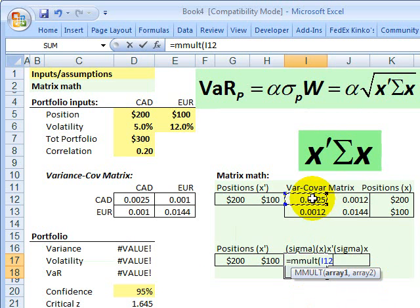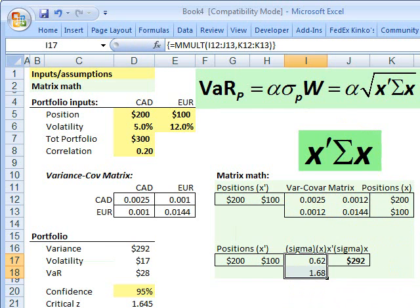MMULT is the Excel function for matrix math. And I'm going to literally select the variance covariance matrix, comma, see how I'm right here. And then my positions, that's my X right here, close parens, and then hit control shift enter to indicate I'm doing a matrix.